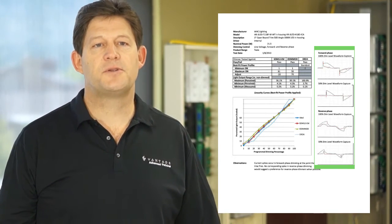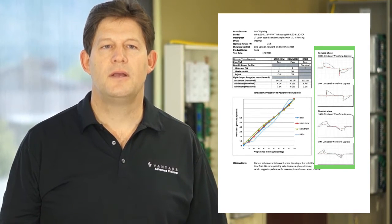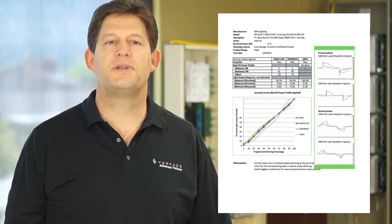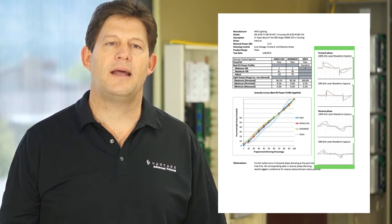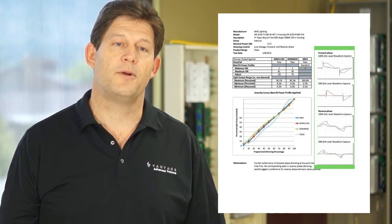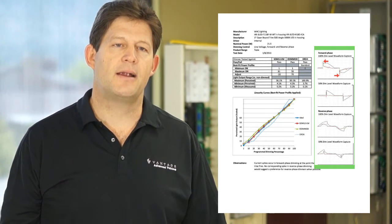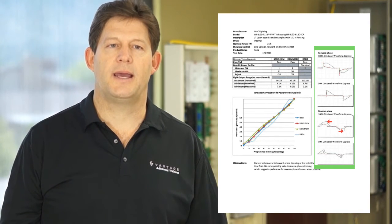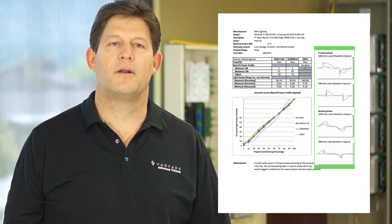Finally, we have the observation section, where flicker, smoothness issues, minimum load issues, and the like are recorded. In this particular report, we point out that on a forward phase dimmer, there is a sharp current spike where the triac fires. And on the reverse phase dimmer, there is no corresponding spike, but a better behaved current waveform.